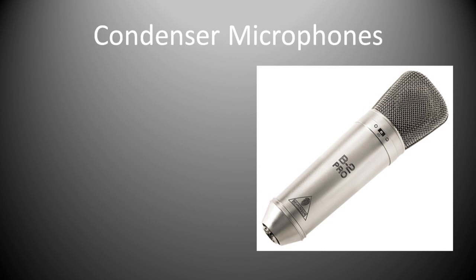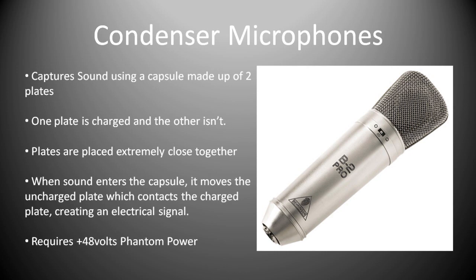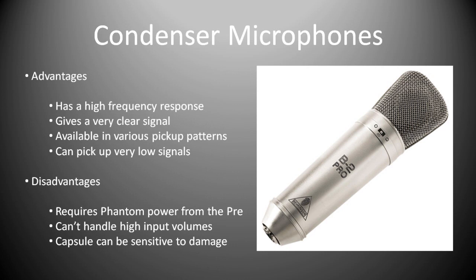The second type is condenser microphones, and this is the Behringer B2 Pro. Condenser microphones work by capturing sound using a capsule made up of two plates. One plate is charged and the other isn't. The plates are placed inside the microphone extremely close together, so when the sound enters the capsule it moves the uncharged plate, which contacts the charged plate, creating an electrical signal. Since one of the plates is charged, this microphone requires power, usually supplied from your preamp or audio interface, known as plus 48 volts phantom power.